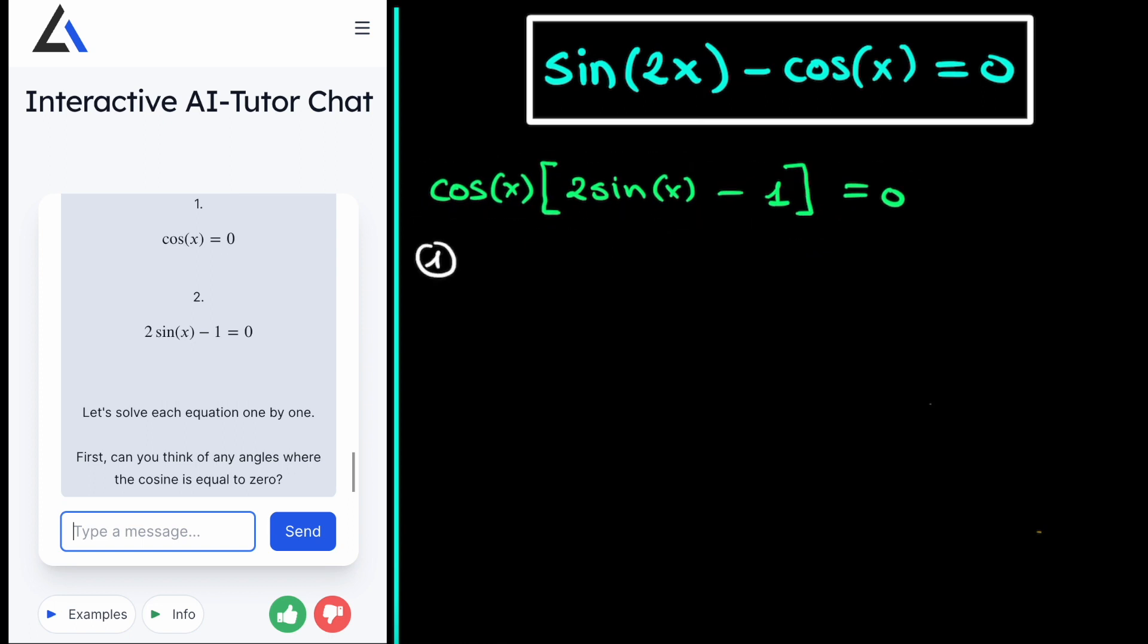The first one is a very easy one. So the cosine of x has to be equal to 0. Now we know when the cosine of x is equal to 0. If we just draw the coniometric circle, then we know that the cosine of x is 0 at pi over 2, which is on top of the circle, and minus pi over 2. Therefore we find that the cosine of x is 0 if x is equal to pi over 2 plus n times pi, where n is just a whole number.